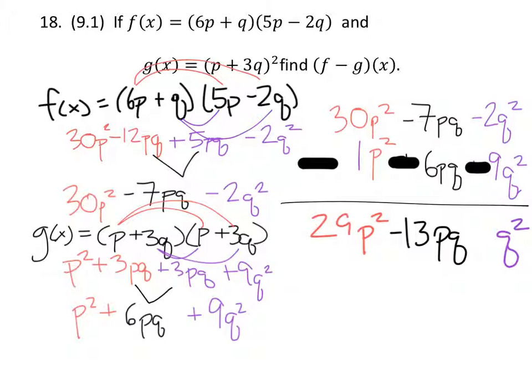Then we have negative 2 minus 9 which is negative 11. So this is our final expression and that's pretty much all we need to do.